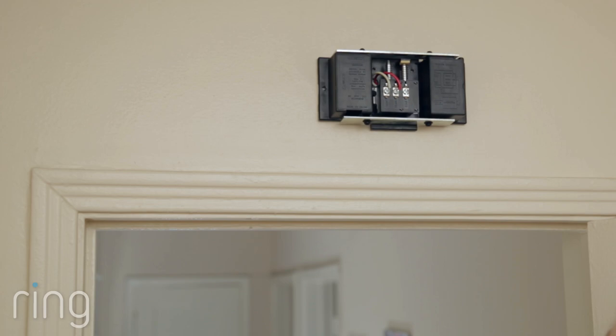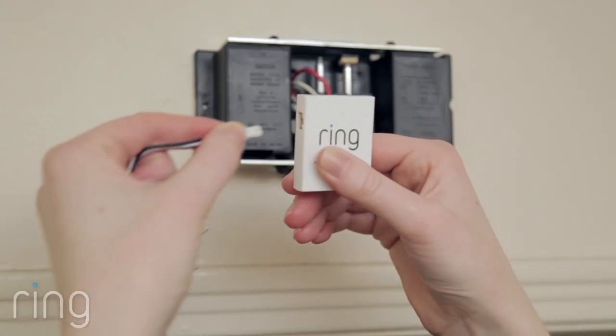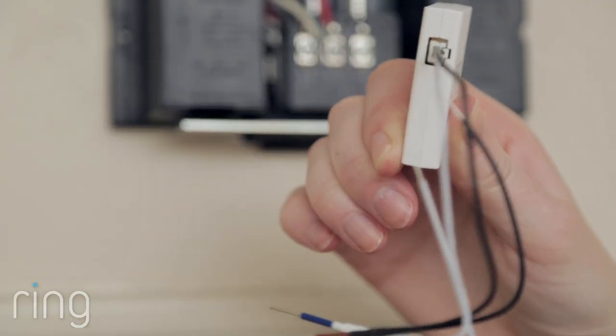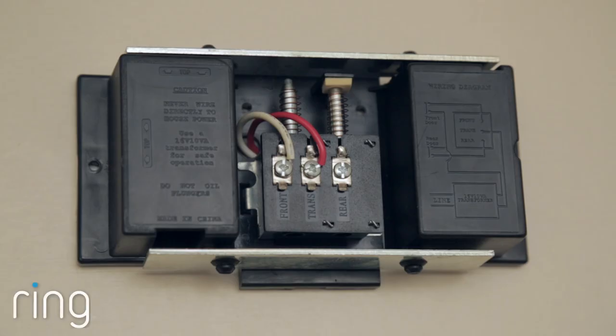Next, attach the wire harness to the Pro Power Kit, making sure it snaps into place. Look for two wires on your doorbell kit. If there are more than two, look for a wire labeled front and one labeled transformer.